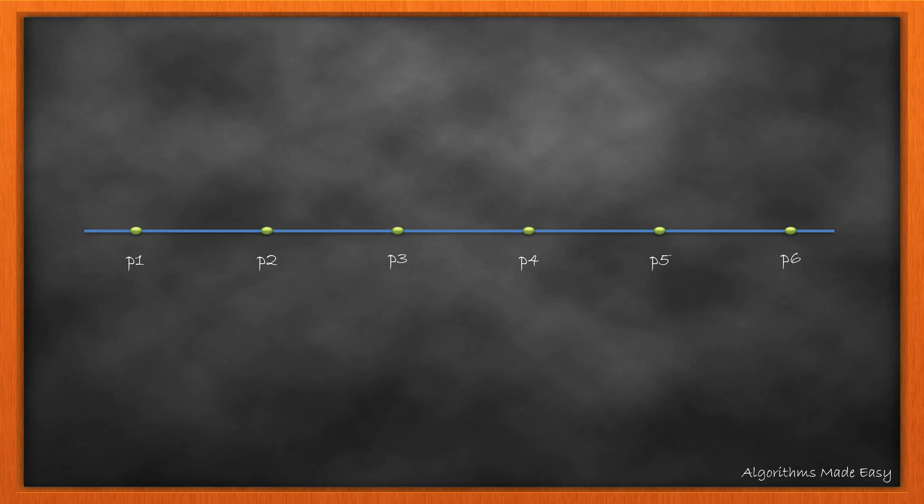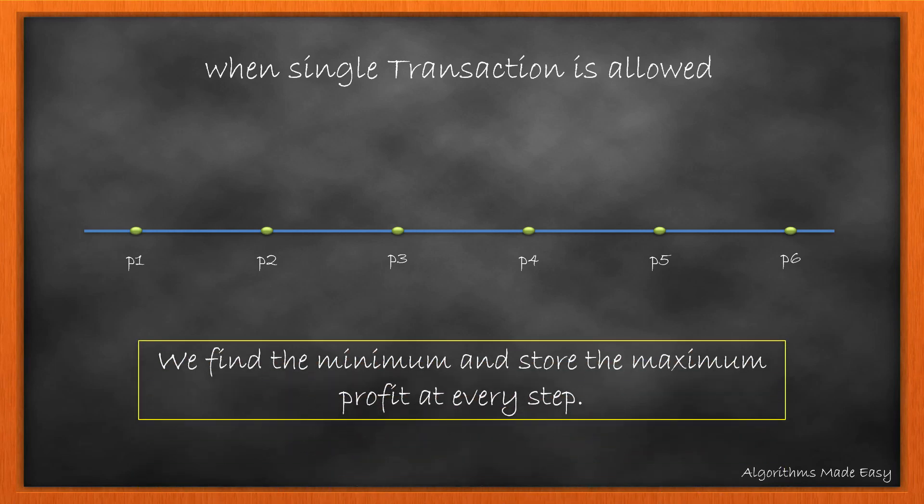Let's first understand the question. Suppose we have these prices given to us. Now if we are allowed only one transaction, we will find the minimum price and the maximum profit at each step. This approach will be very helpful in this question. Let's come back on this in a little bit.